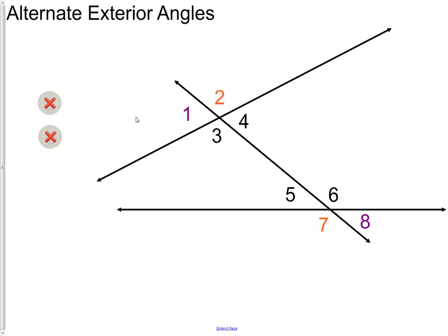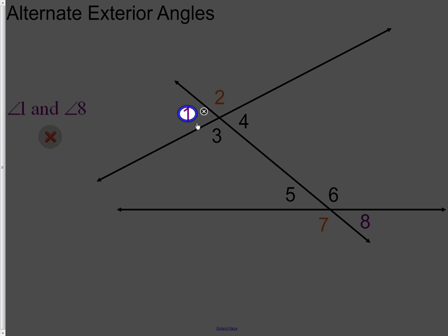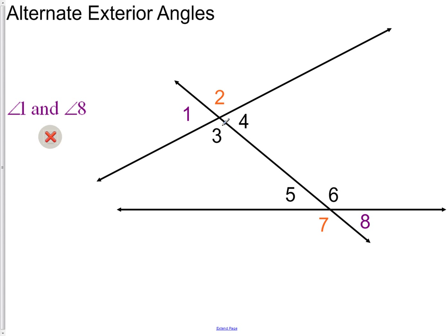Now, we have alternate exterior angles. This is where angles one and eight come in. Angle one is on the outside of this pair, and angle eight is on the outside of the other pair, or section. And also, we have angles two and seven. They would also be considered alternate exterior angles.